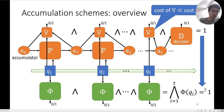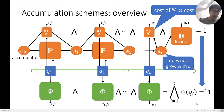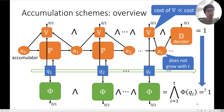Even if the decider is quite expensive, its cost is amortized over all time steps t. We also require that the size of the accumulator does not grow with t, which also means the decider's running time does not grow with t — this avoids certain trivial constructions.